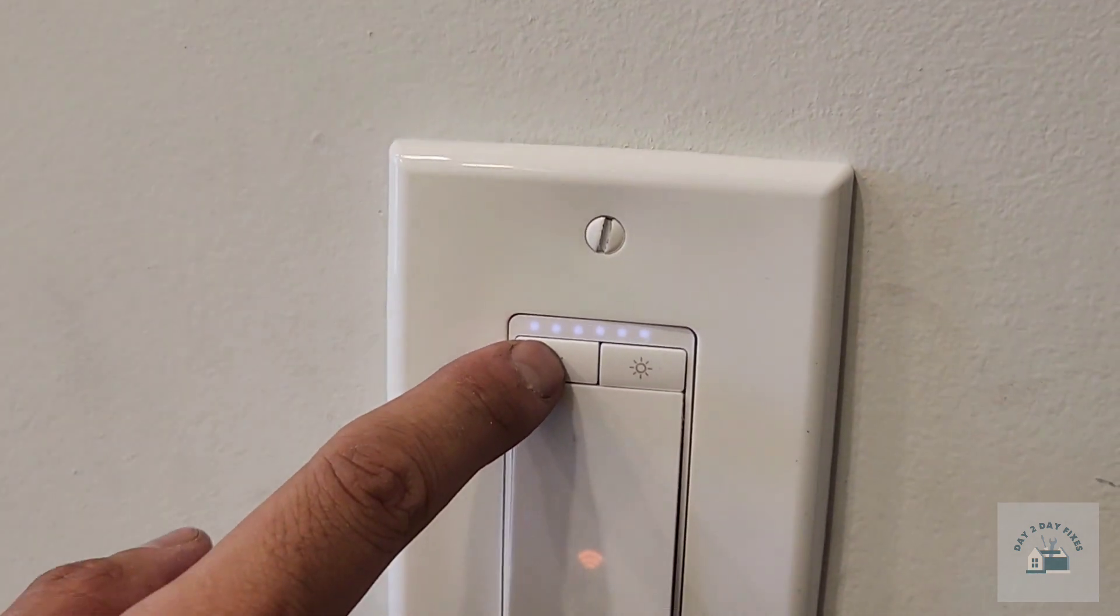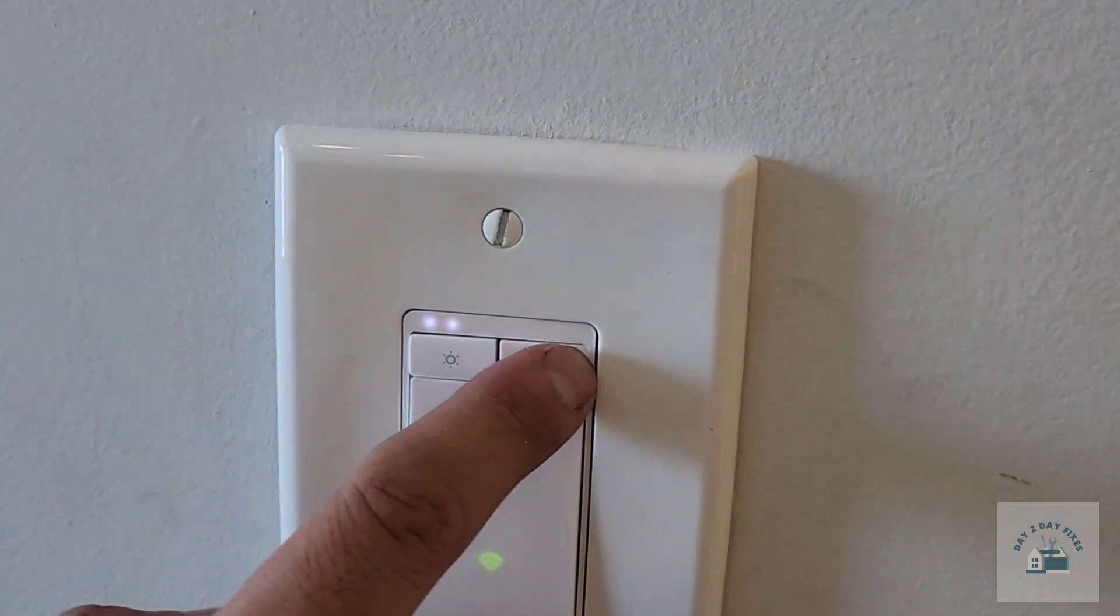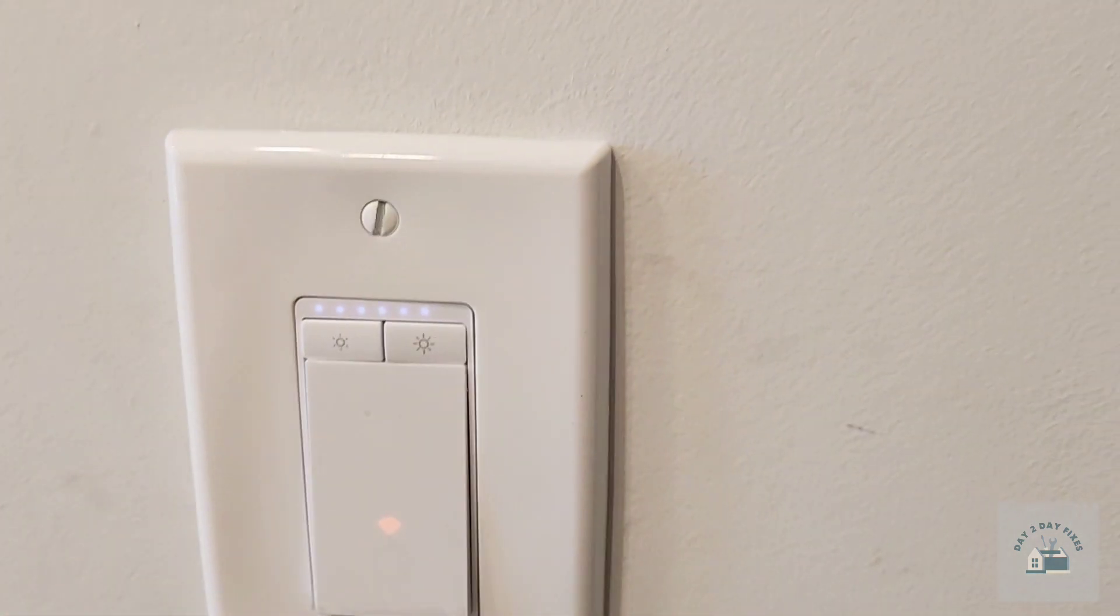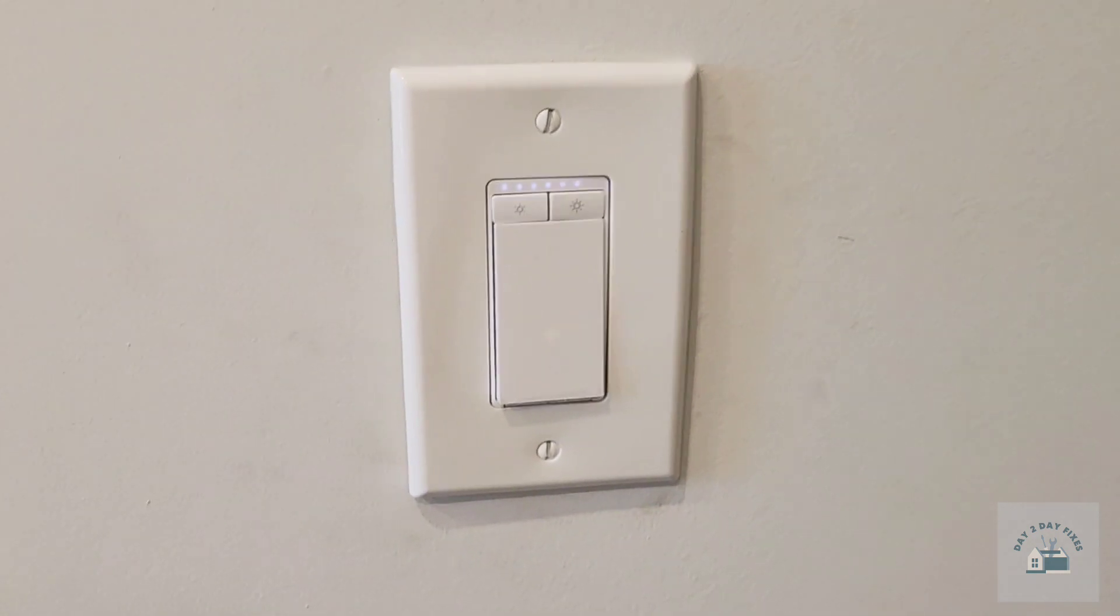As you dim the switch, light indicators go down and as you increase, they go up as shown. Comment if you would like to see the video on the app setup. Check out the description for more links on products used. Thanks for watching.